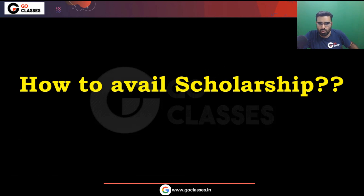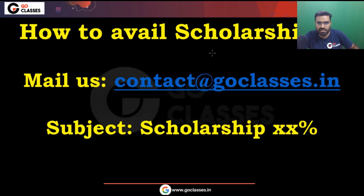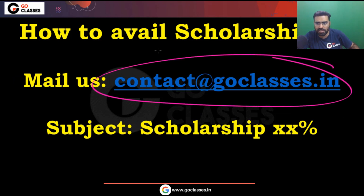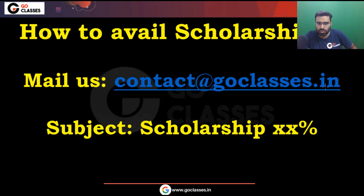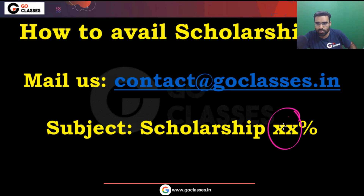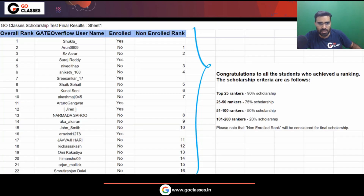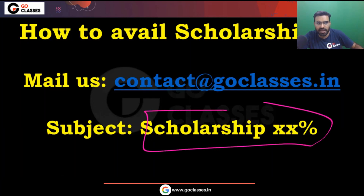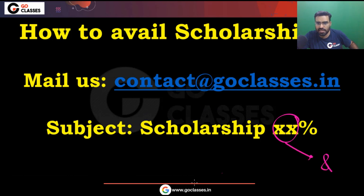Now, how to avail this scholarship. If you want to avail the scholarship, all you have to do is send us a mail to contact@goclasses.in — you can find this email ID in the description. In the subject of the mail, you can put 'Scholarship XX%', where XX is the scholarship percentage you are eligible for. For example, a student eligible for 8% scholarship can write 'Scholarship 8%' in the subject.